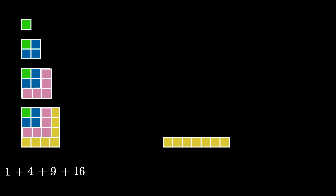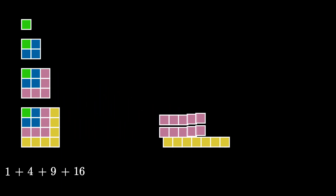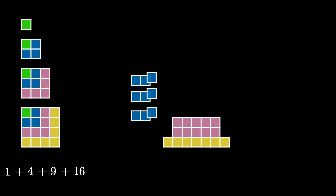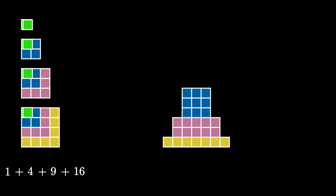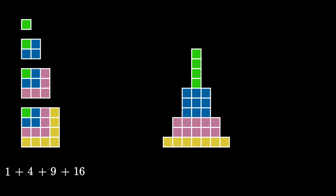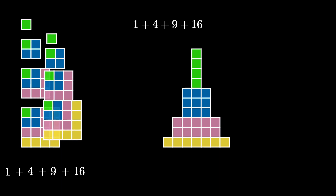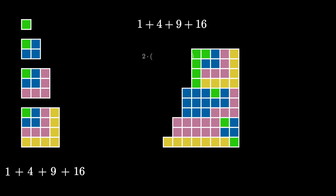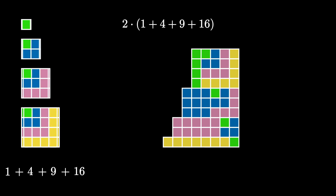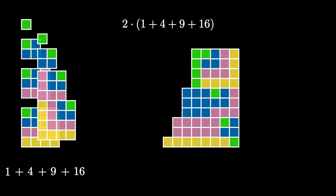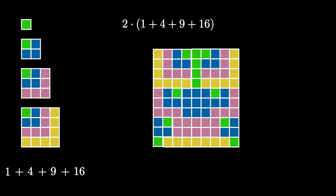We can use one copy of the stack to lay out a tower with a base that's 1 by 7, the next level 2 by 5, the next level 3 by 3, and the final level 4 by 1. We can then use another copy of the stack on the side, giving us two total copies. Finally, we can use a third copy on the left side.